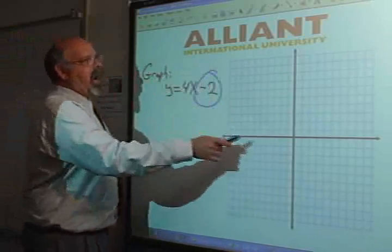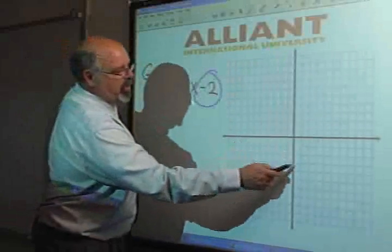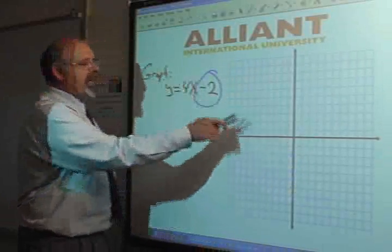This is where it crosses the y-intercept. This is the y-axis. So you go down, negative 2. There is one point on that line.